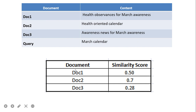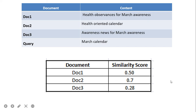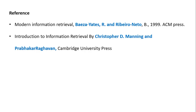The vector model gives ranks between 0 and 1. When documents are retrieved, Document 2 is retrieved first as it is most relevant to the query 'march calendar', followed by Document 1, then Document 3. This concludes the vector retrieval model exercises. Two books were referenced for this presentation: 'Modern Information Retrieval' by Baeza-Yates and 'Introduction to Information Retrieval'.